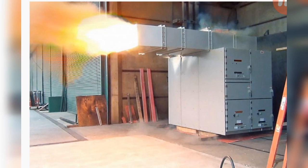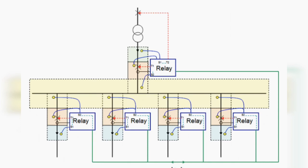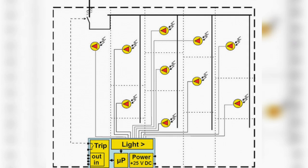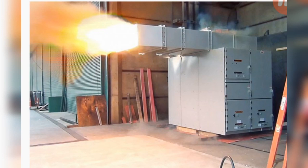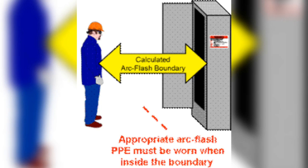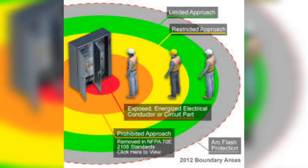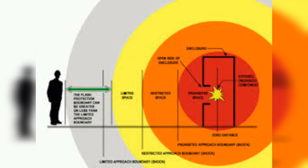Today we are discussing the production of LV and MV switchgears. Arc faults and arc protection are the most devastating fault types. An arc fault in a medium voltage or low voltage switchgear is one of the most devastating fault types in a power system.